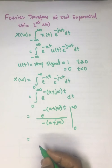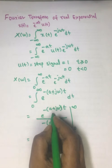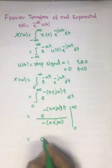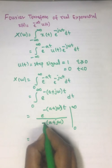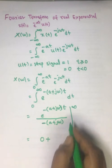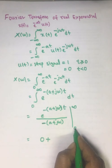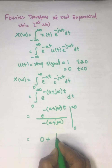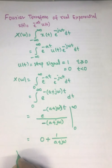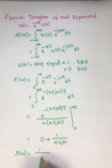Substituting the upper limit, e^(-∞) = 0. With the double negative, minus and minus becomes plus. Substituting t = 0, e^0 = 1, so we get 1 divided by (a + jω). Therefore, X(ω) = 1/(a + jω).